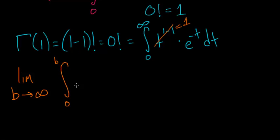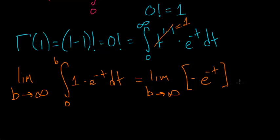0 to b of 1 multiplied by e to the minus t dt. And this is equal to the limit as b approaches infinity of the anti-derivative of this expression, so that's minus e to the minus t evaluated between 0 and b.